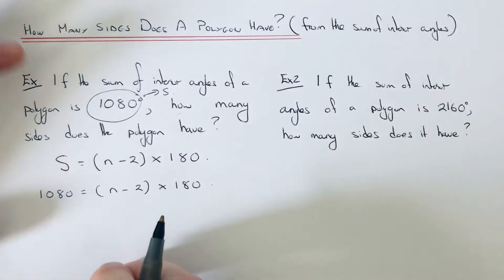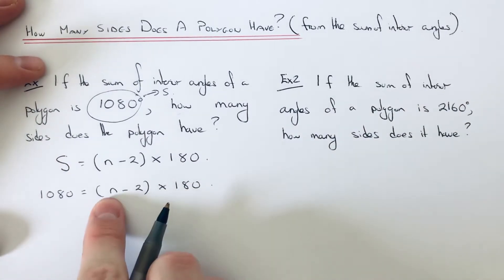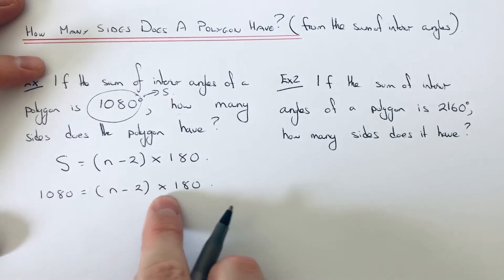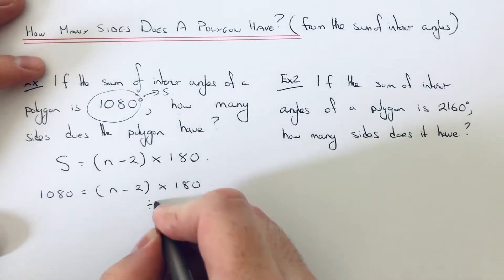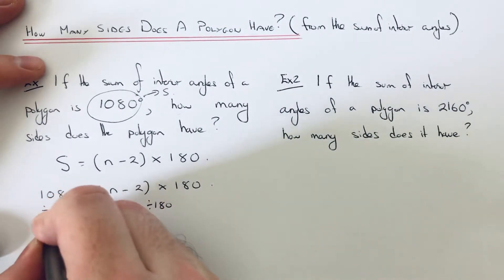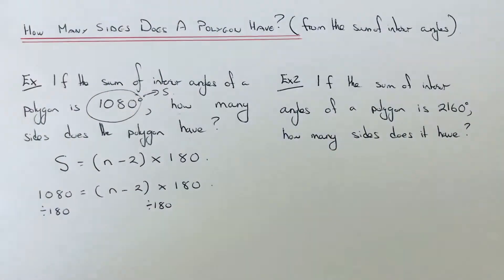So we just need to figure out what n is. N is the number of sides. First of all, I'm going to get rid of the times by 180 by dividing by 180.